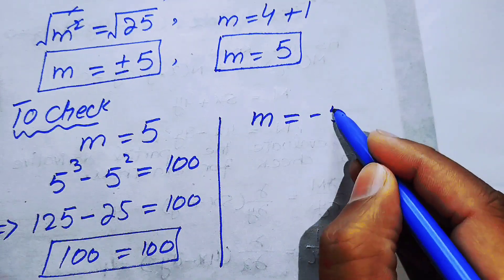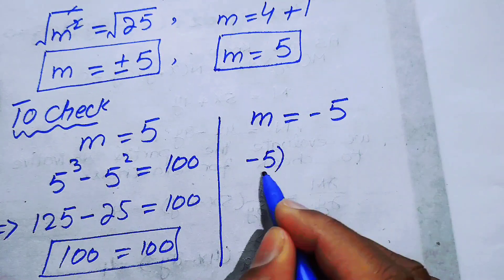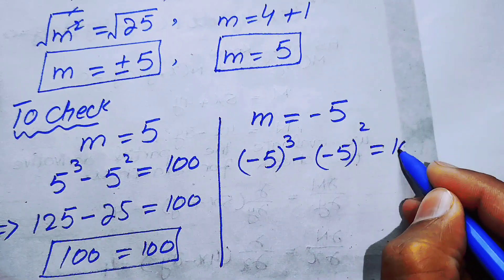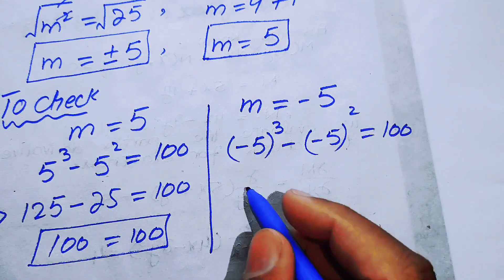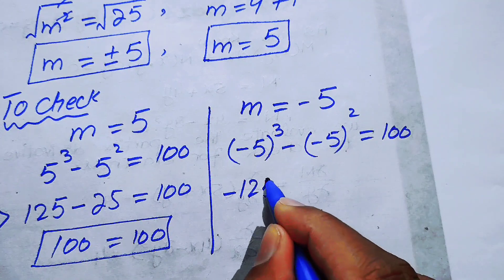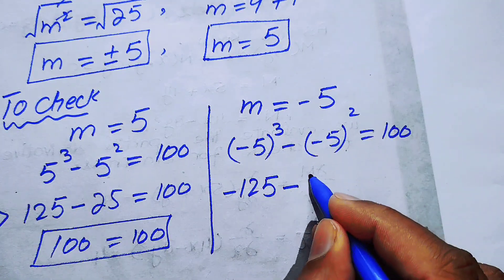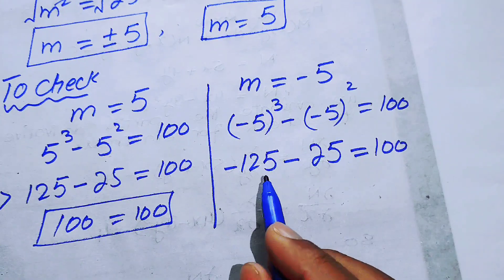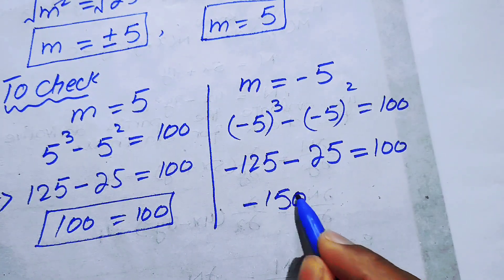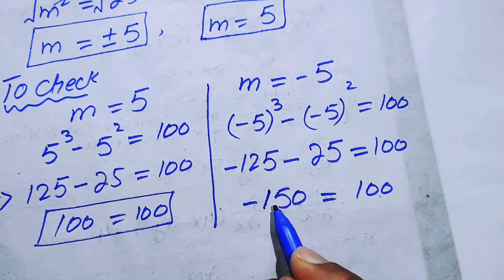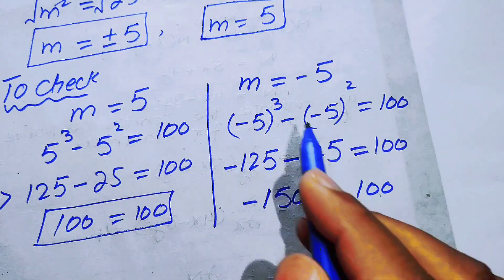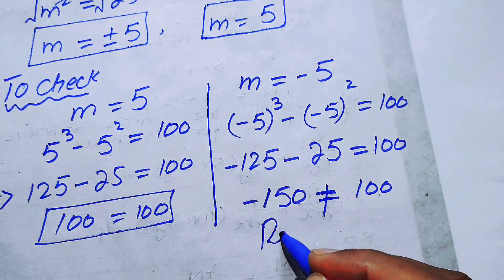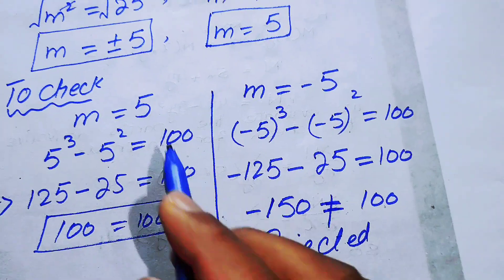Now we check the other value, m equals negative 5. Substituting into the equation: negative 5 cubed minus negative 5 squared equals 100. We get minus 125 minus positive 25, which gives minus 150 equals 100. Since minus 150 is not equal to 100, m equals minus 5 does not satisfy the equation and is rejected.